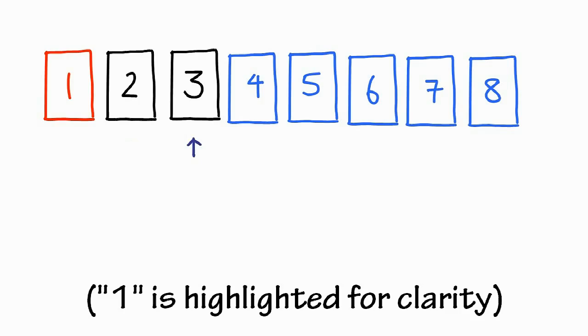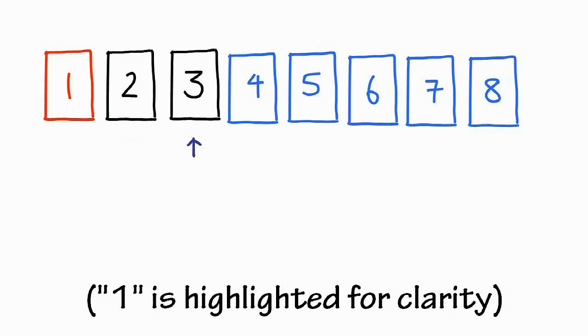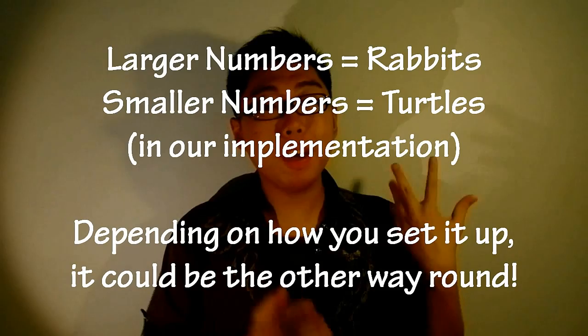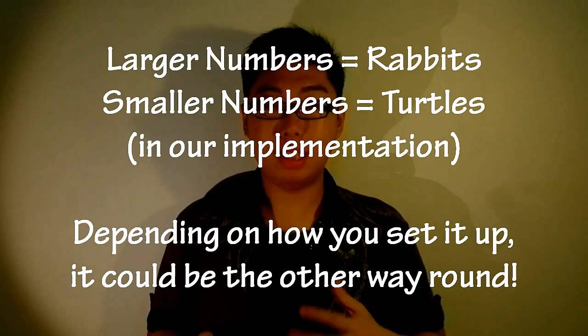This is what leads to the term Rabbids and Turtles. Larger numbers in the list are considered Rabbids, because they move really quickly to the right of the list. Small numbers are called Turtles, because they barely move at all. Their movement is extremely slow, and most of the time one pass only moves them one space.